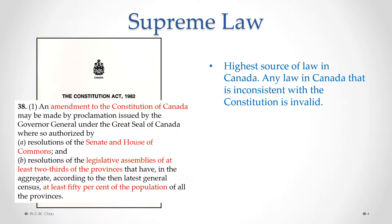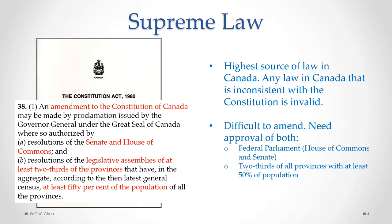What we also find in the Constitution Act 1982 is something called the amending formula. The amending formula sets out the requirements for making an amendment or a change to the Constitution. This amending formula is purposely set up to make it very difficult to amend the Constitution. What it requires is the approval of, number one, the federal parliament, which would include both the House of Commons and the Senate. We also need the approval of at least two-thirds of all the provinces, and those provinces have to represent at least 50 percent or half of the population. Practically speaking, it would be very difficult to get an amendment if one or two of the biggest provinces — Ontario, Quebec, and BC — don't approve of an amendment.